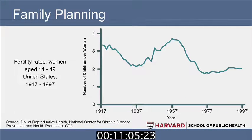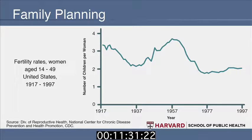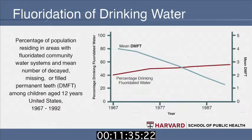Another achievement is family planning. Smaller families and longer intervals between births contribute to the better health of children, better health of mothers, and better social and economic status for women. Family planning has been the tool to achieve this. And fluoridation of drinking water — we've had a major decline in cavities, or dental caries, since the discovery of water fluoridation in the 1940s. This is still controversial, but it has had a dramatic impact in improving oral health for the entire population.